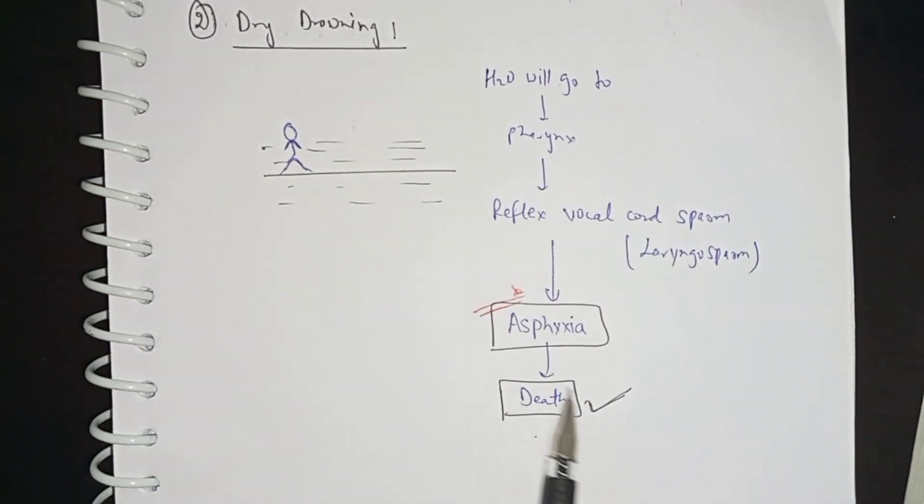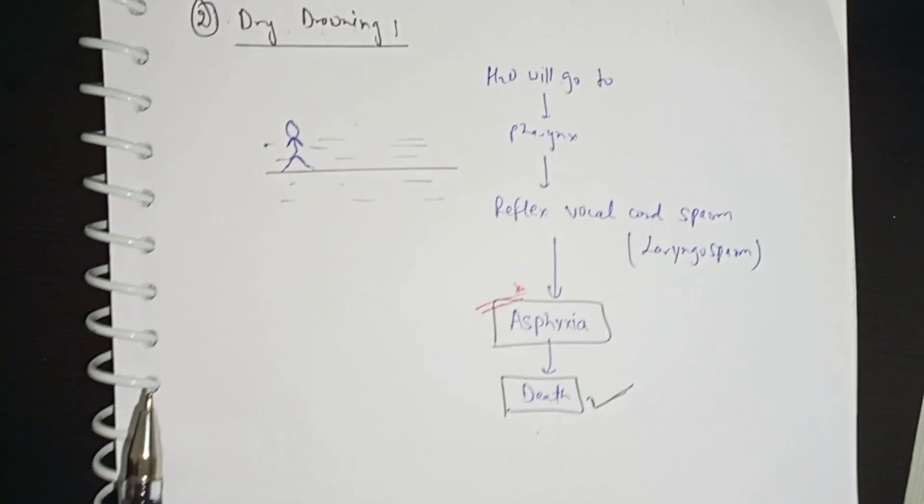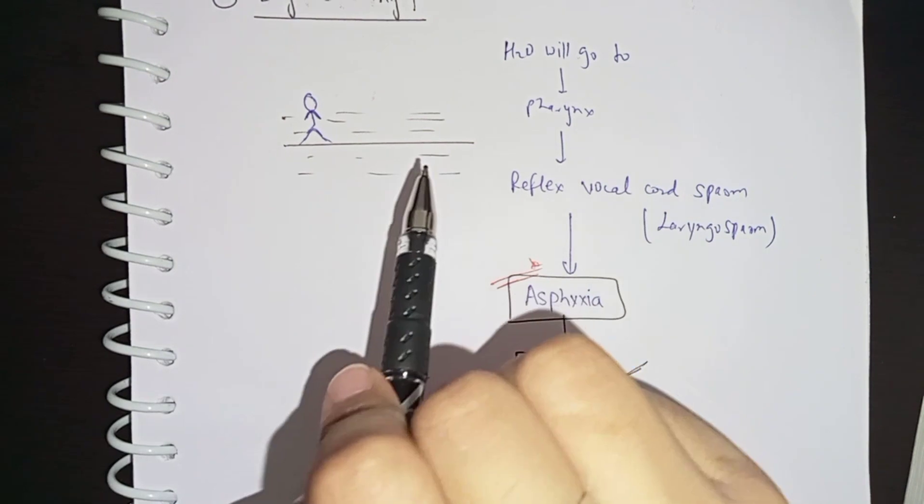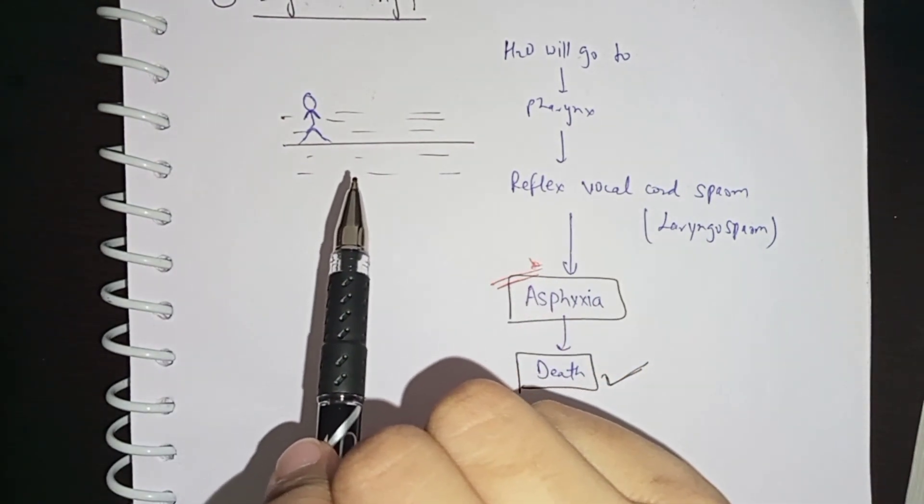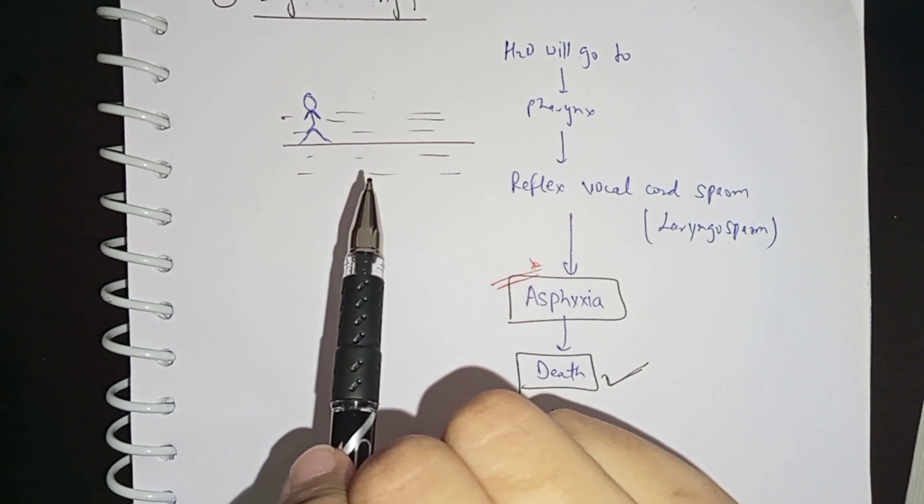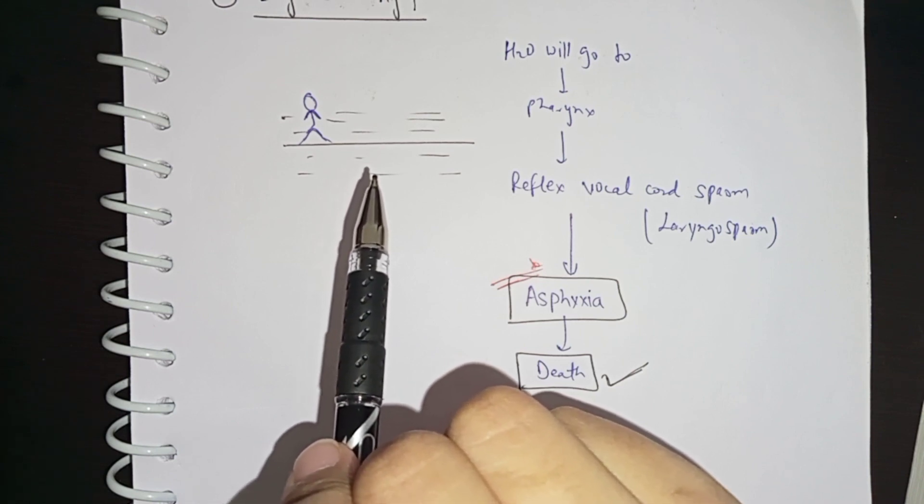While in the case of wet, there are two things: fresh water and seawater. In fresh water - cardiac arrhythmia. In seawater - pulmonary edema causes respiratory failure.